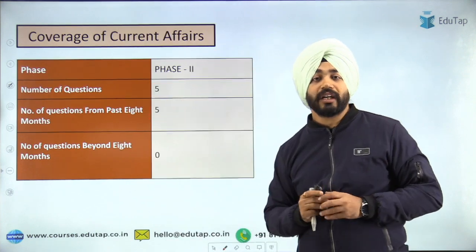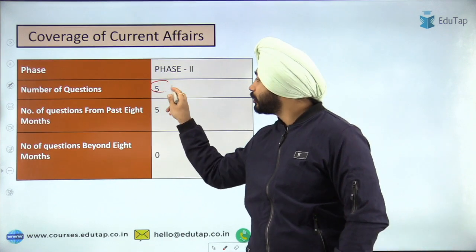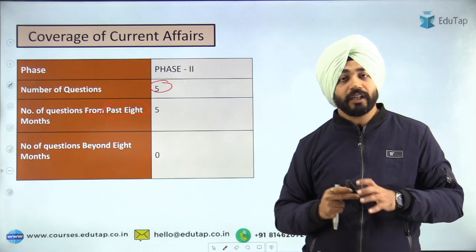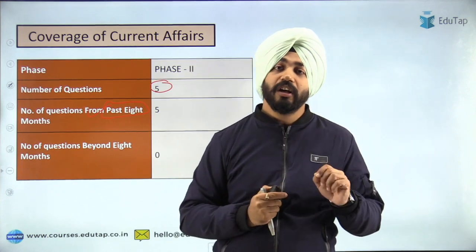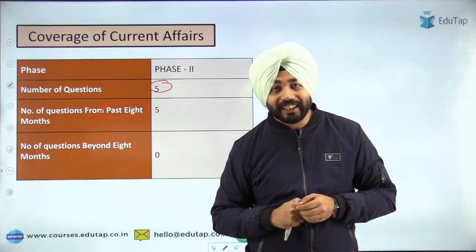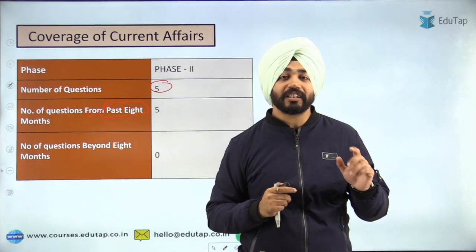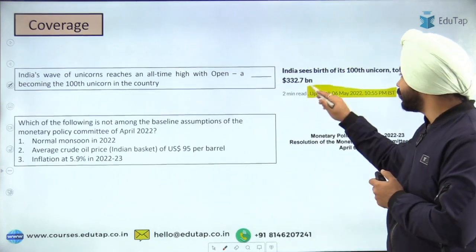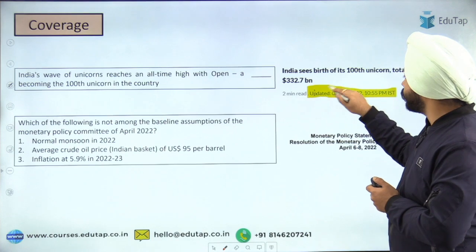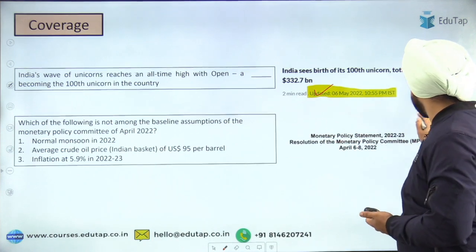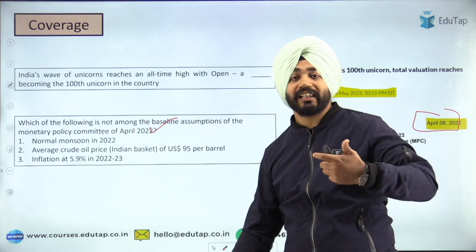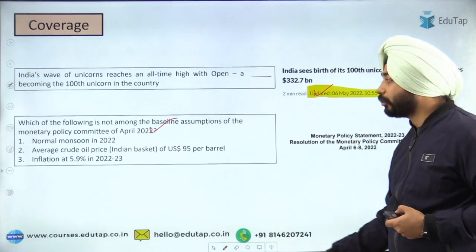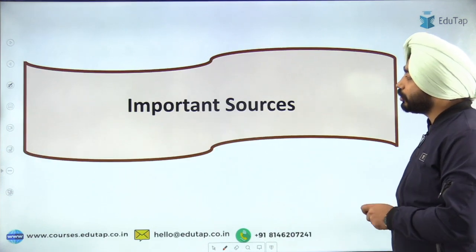For Phase 2, there are only five questions, but coverage up to eight months is important. Now, what to read is the critical question. As an example — the Monetary Policy Committee question I mentioned was released in April, the Phase 1 exam was in May, and the question was asked from April. For important sources: the RBI website is very important, consisting of RBI notifications and RBI press releases. The newspapers highlighted in the syllabus are Live Mint and Hindu BusinessLine, defined in the RBI notification itself.